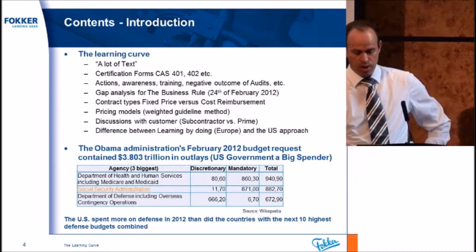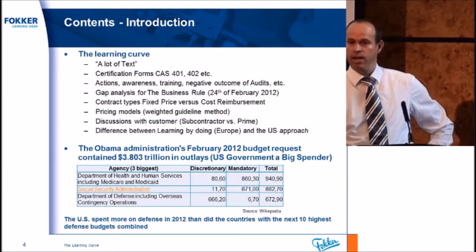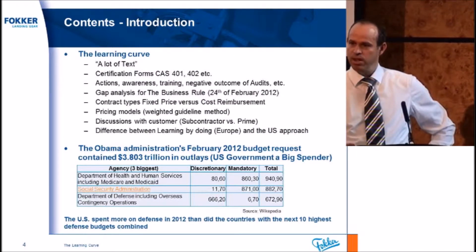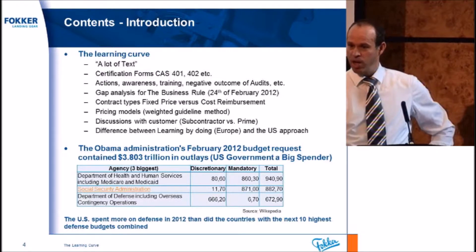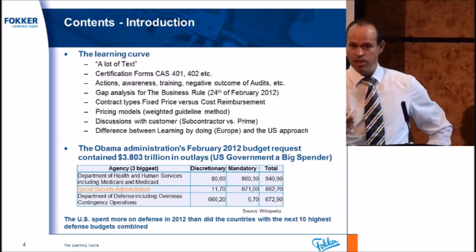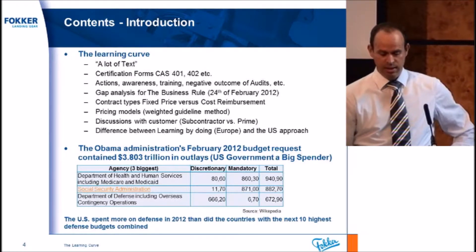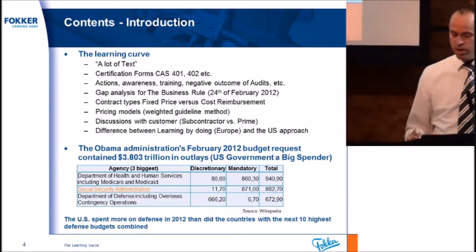So what are the subjects that I'm going to touch on? That's more or less the first encounter that I had with FAR and CAS — cost accounting standards. What you will see in my presentation is I'm a finance manager, so I will take the angle from finance, not so much from sales or from procurement, but more or less from finance. And what kind of risks did I see? And what kind of learning curve did I have? So I will discuss the complete presentation based on the learning curve.